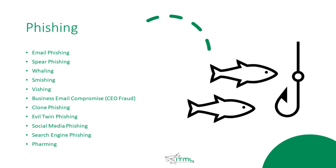A business email compromise is a case where the attacker is impersonating someone important from your company, like the CEO or your manager. Clone phishing and evil twin phishing usually involve taking a normal email you received, and the second email seems to be from the same person, but it is actually an attacker trying to phish you. Social media phishing uses social media to contact you and try to deceive you. Even your search engine might be compromised and give you results that are not true.